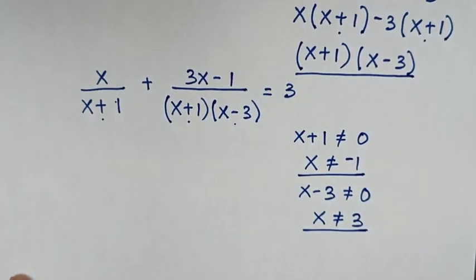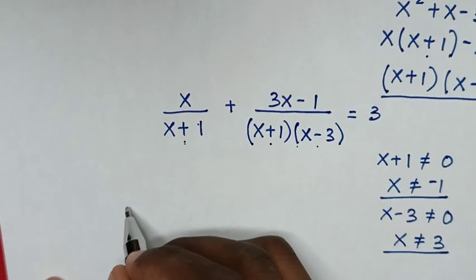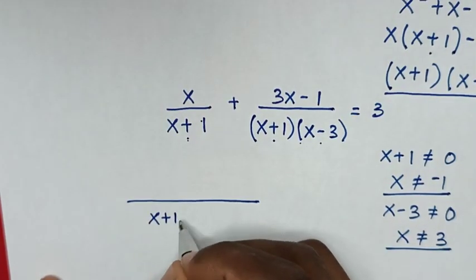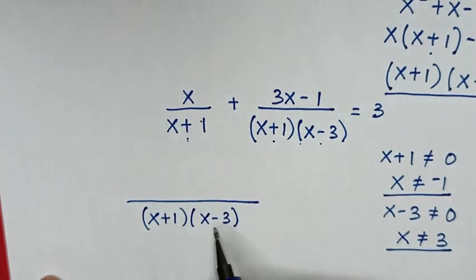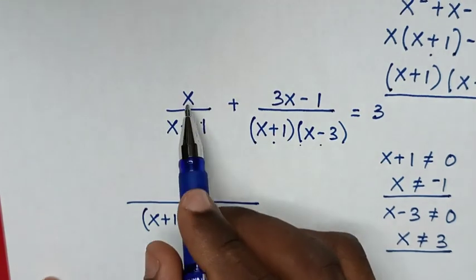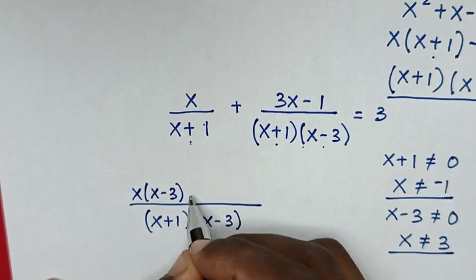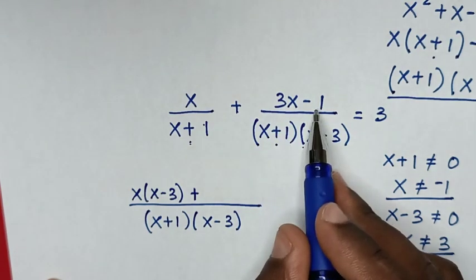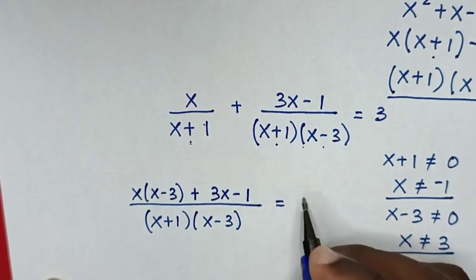In the next step, the common denominator is (x plus 1)(x minus 3). So the first fraction becomes x times (x minus 3) over (x plus 1)(x minus 3), and the second fraction's numerator stays as (3x minus 1), giving x(x minus 3) plus (3x minus 1) all over (x plus 1)(x minus 3) equals 3.